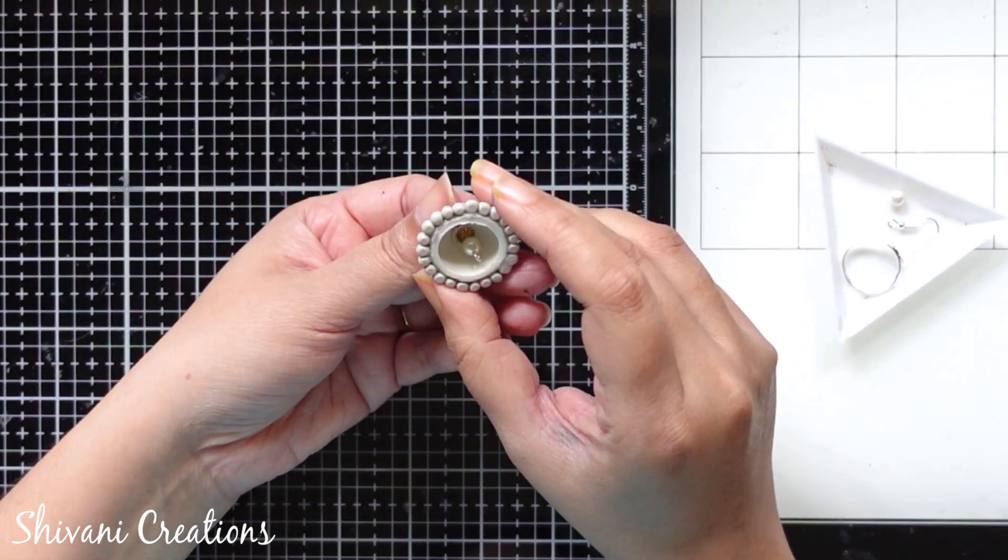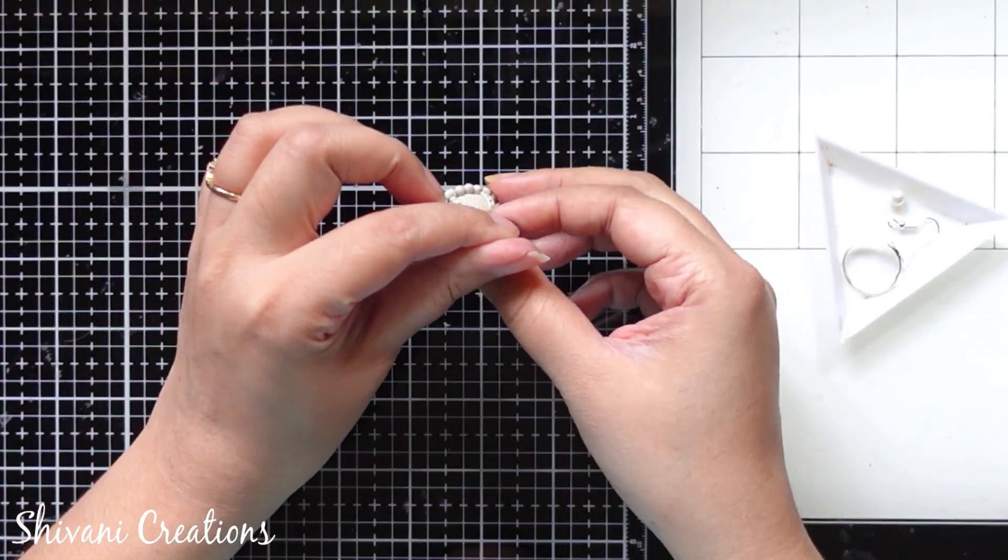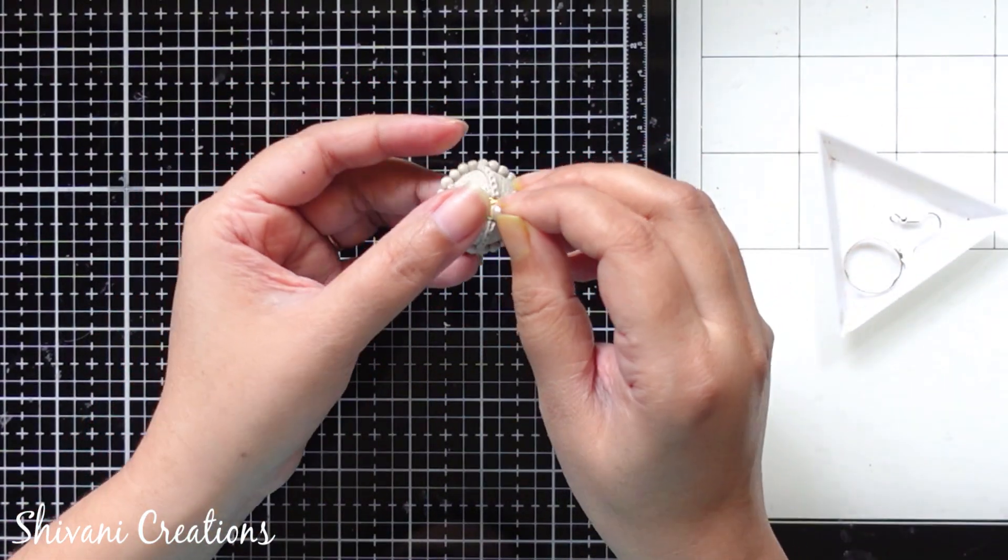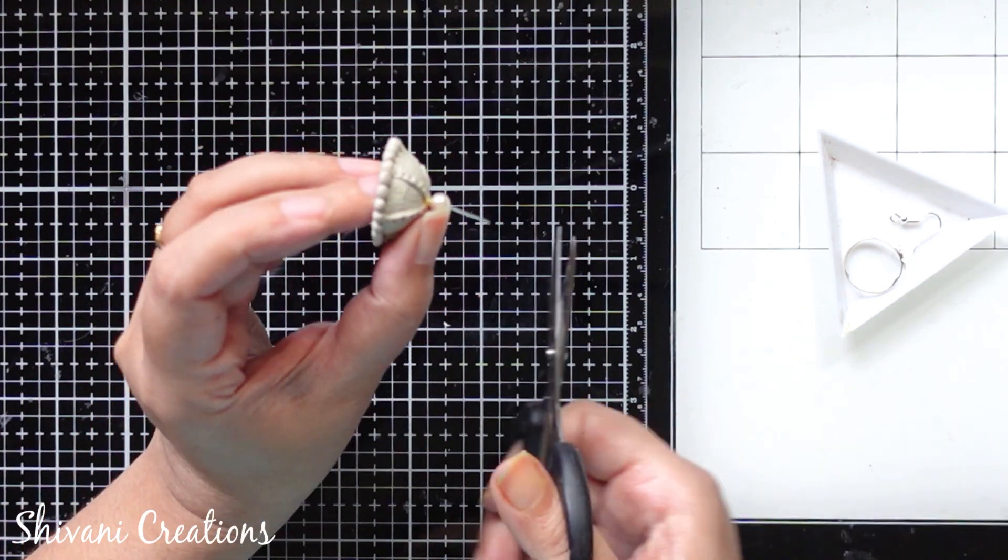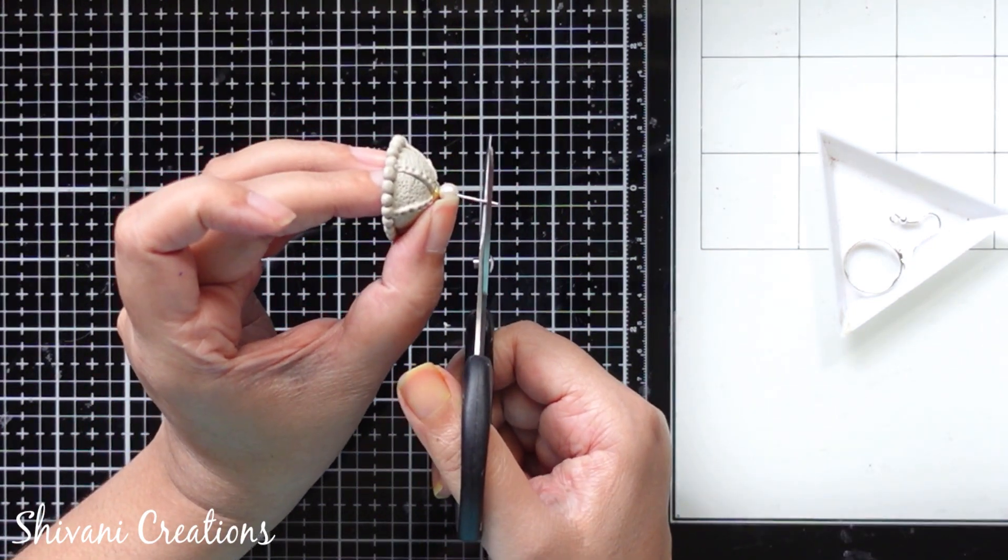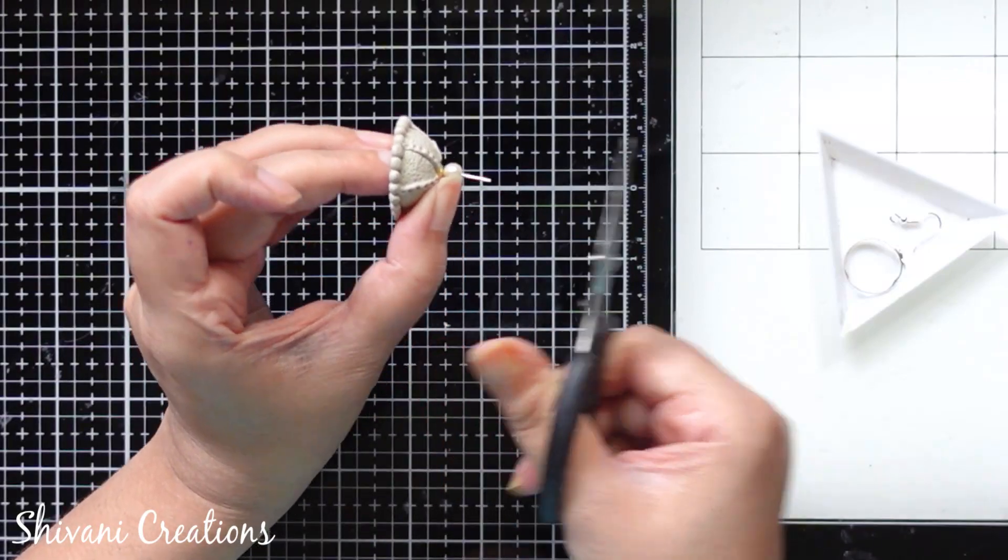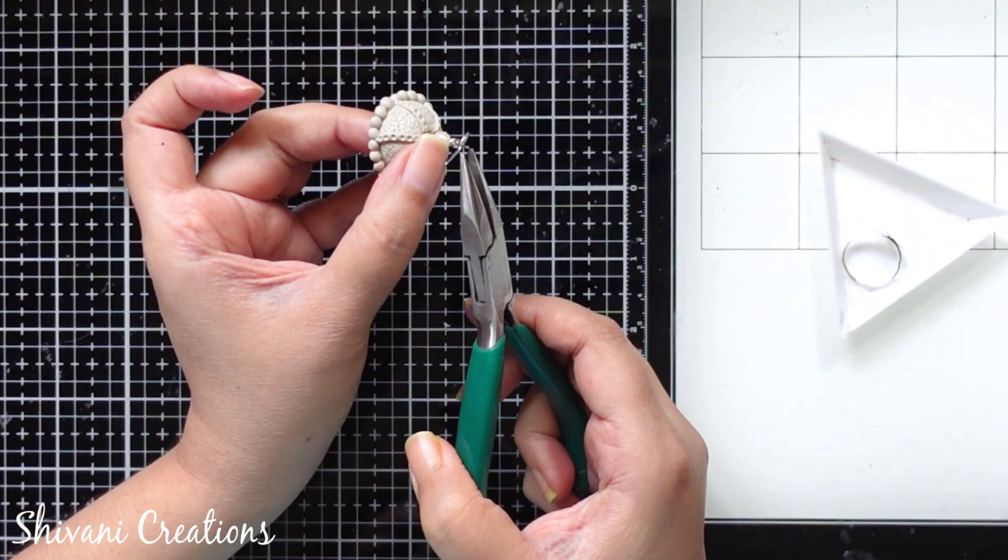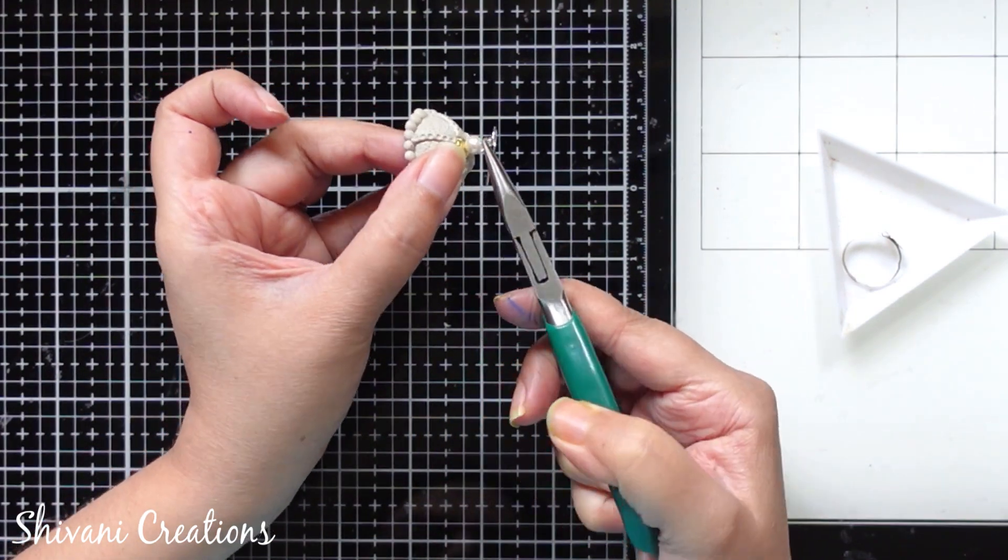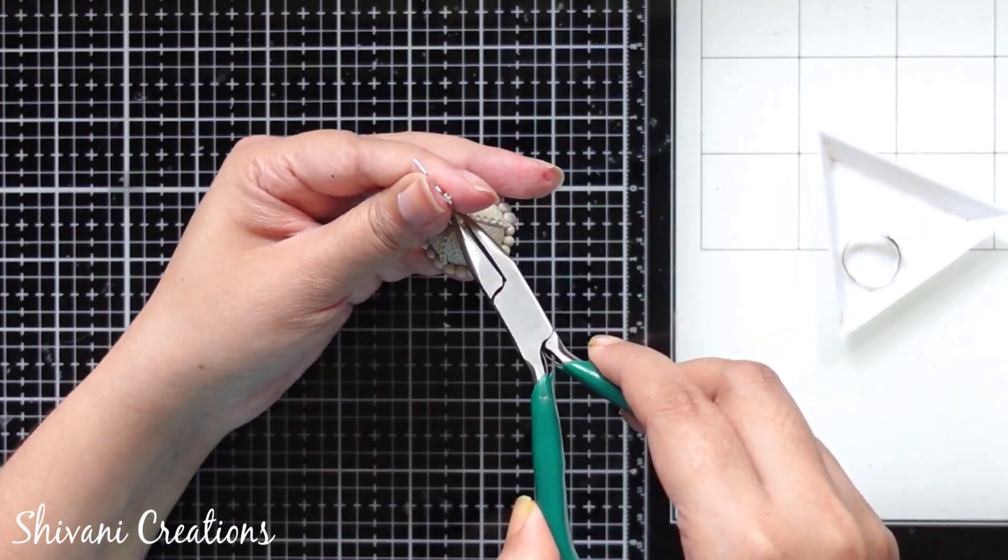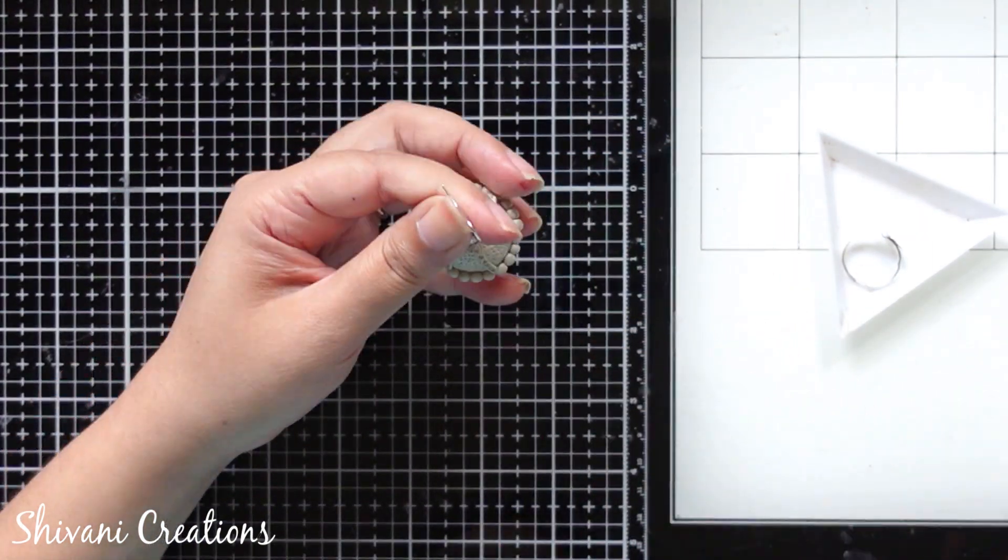Then adding one more pearl on top of this, cutting the excess wire from top. Then passing one earring hook from this and then twist the wire using plier. And the jumka is ready.